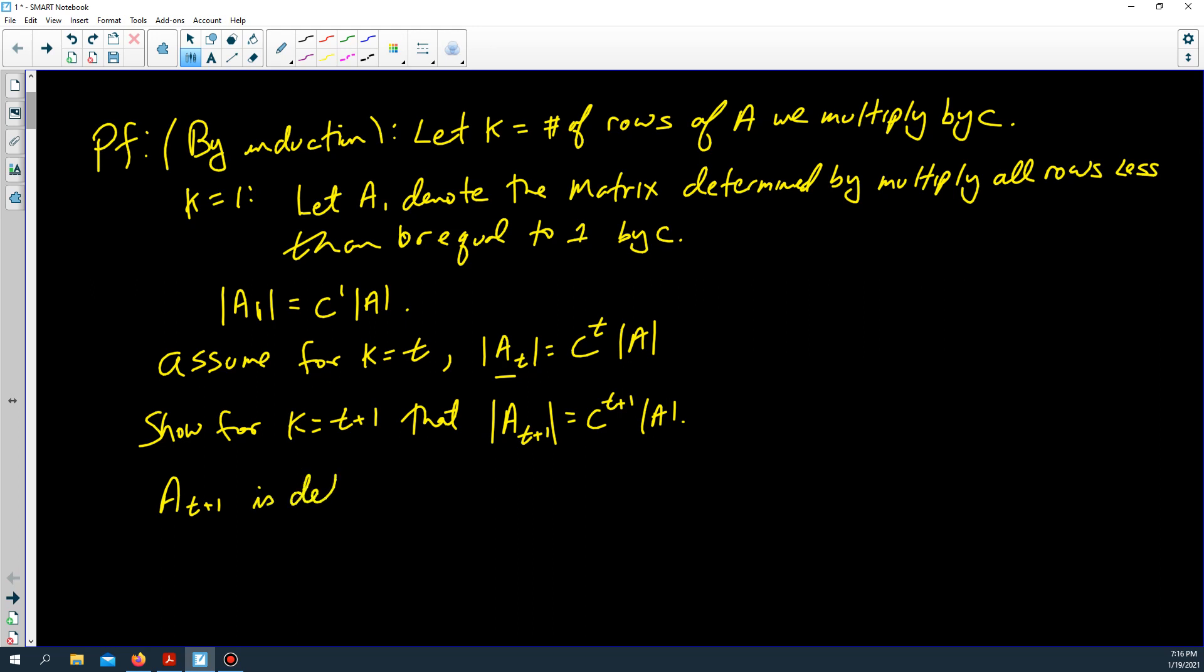A_{t+1} is obtained from matrix A_t by multiplying row t plus 1 by c. So we're taking matrix A_t and we're multiplying every entry in one of the rows of A_t by c and we are getting A_{t+1}.